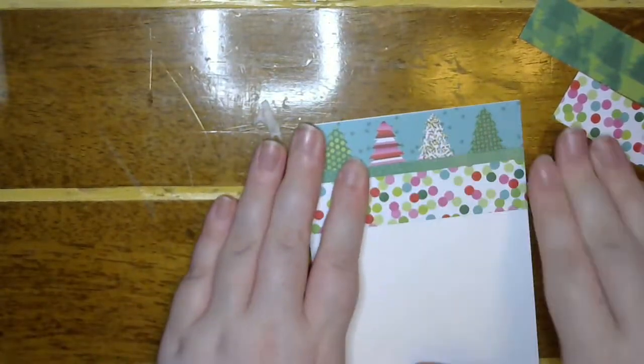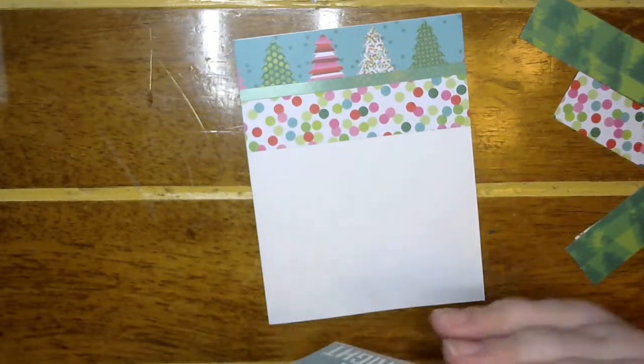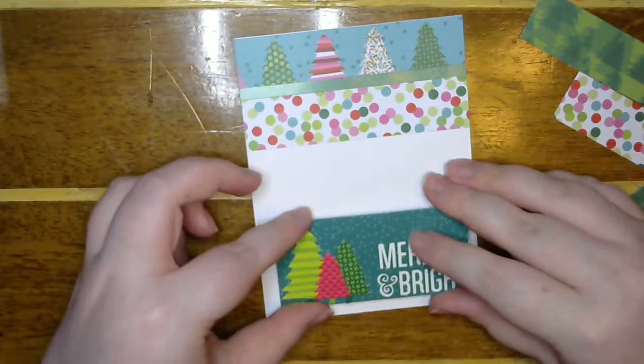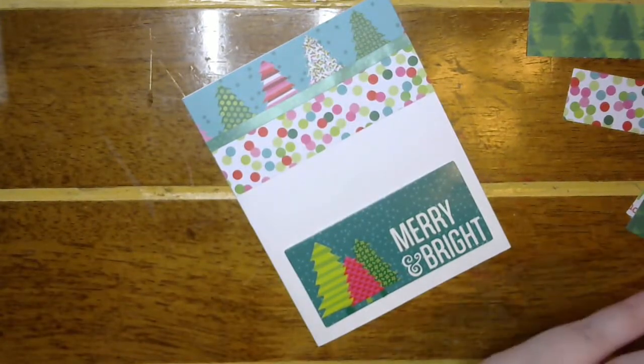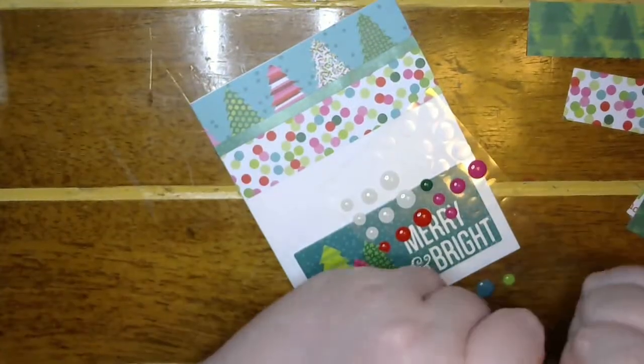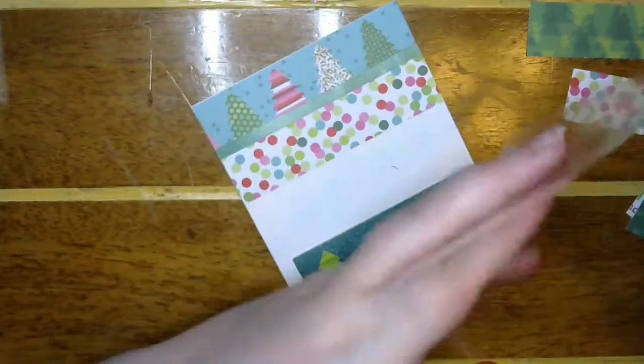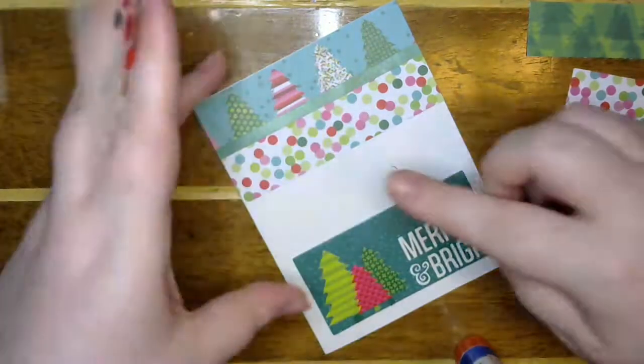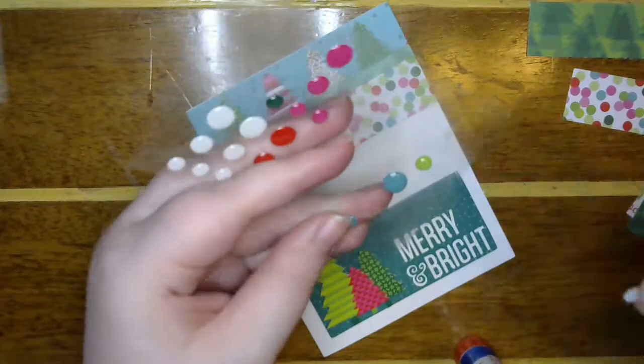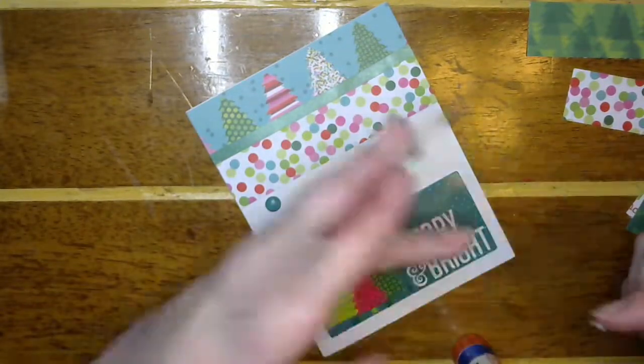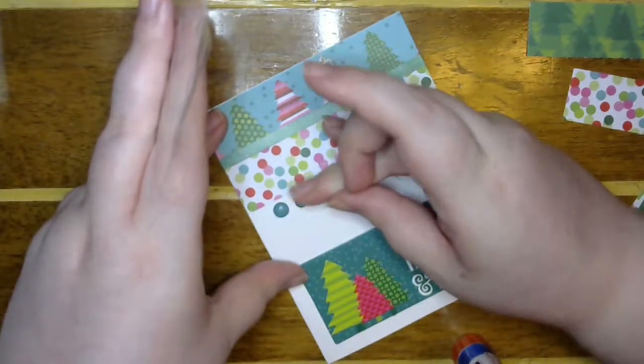And then on the sketch you have your sentiment up here and then your image right here. But instead, because I want to use up my kit, I've got this image and sentiment right here. I'm going to put it right here where the image would be. And then let's use some enamel dots up in where the sentiment would be.